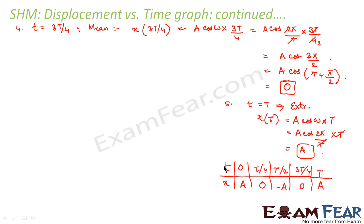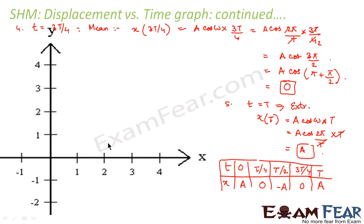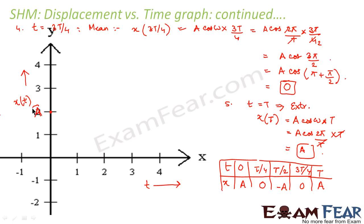Now with this data we can very easily plot the graph. We consider time t along the x-axis and displacement x(t) along the y-axis. Let us consider this point as A on the y-axis, and correspondingly this point represents −A.